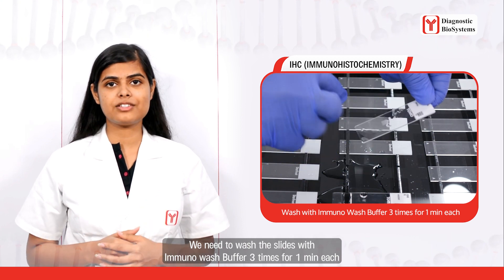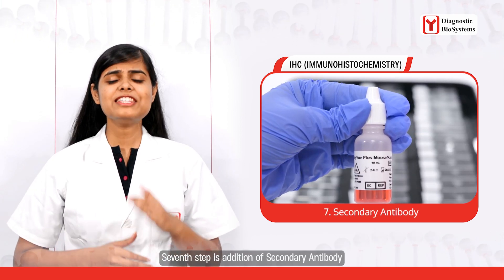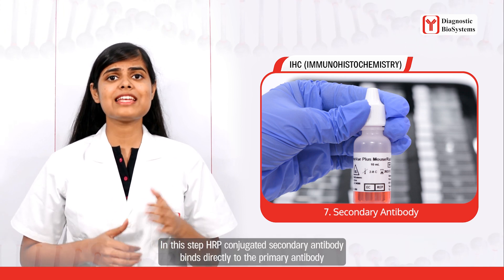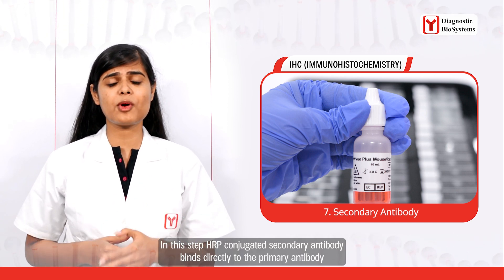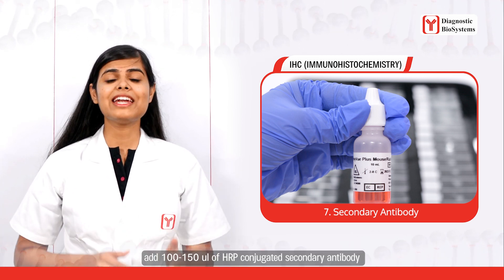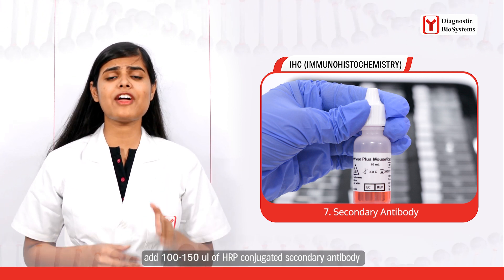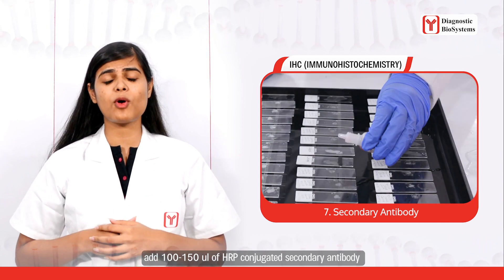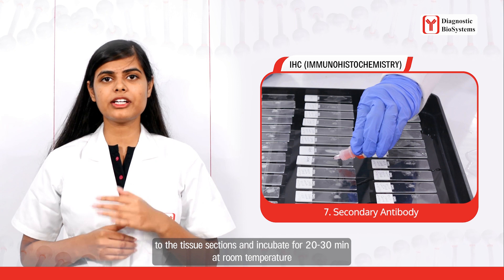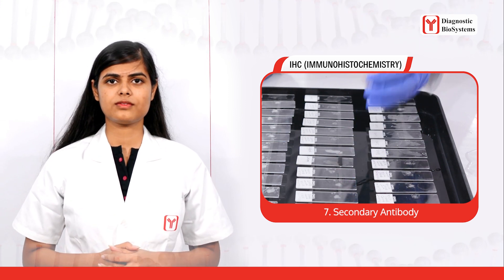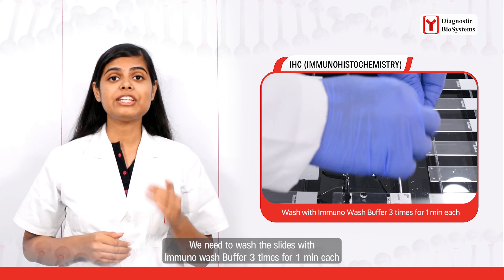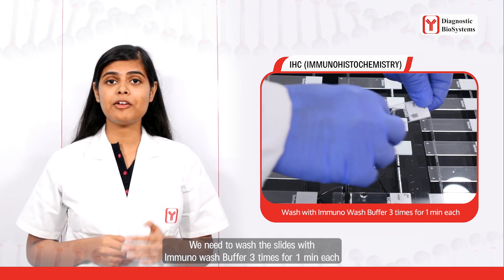The seventh step is addition of secondary antibody. An HRP-conjugated secondary antibody binds directly to the primary antibody. Add 100 to 150 microliters of HRP-conjugated secondary antibody to the tissue sections and incubate for 20 to 30 minutes at room temperature, then wash the slides with immunowash buffer three times, one minute each.